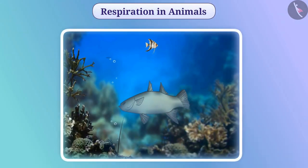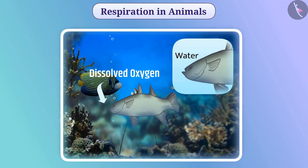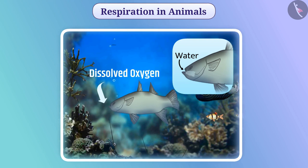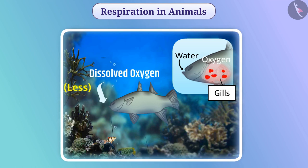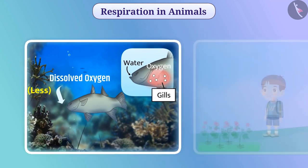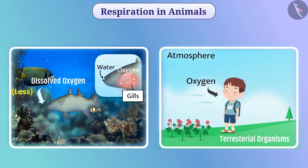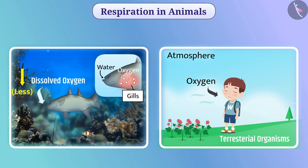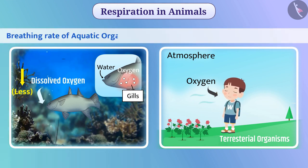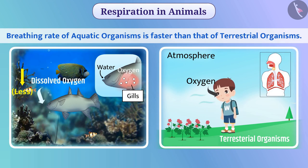Organisms living in water obtain oxygen dissolved in water. The fish takes water inside the body from the mouth and forcefully sends it through the gills, where blood absorbs the oxygen dissolved in water. For respiration, terrestrial organisms receive oxygen from the atmosphere. The amount of soluble oxygen present in water is less than that in the atmosphere. Therefore, the breathing rate of aquatic organisms is faster than that of terrestrial organisms.